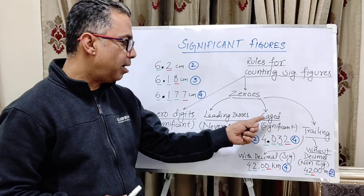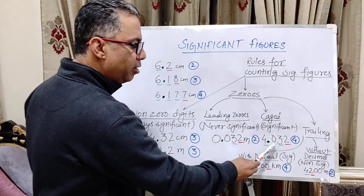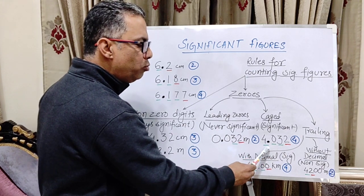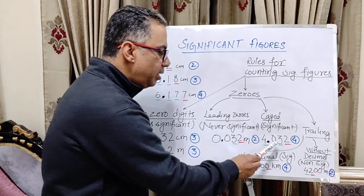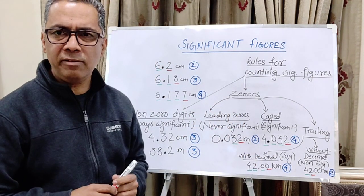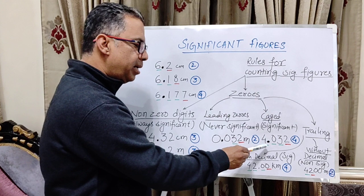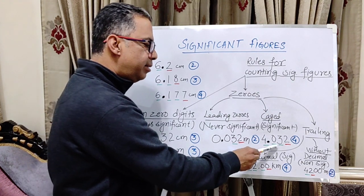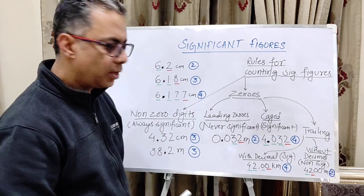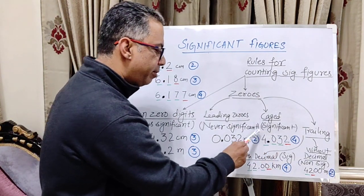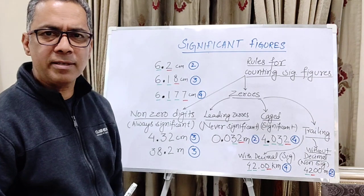Then we have another category of zeros which I call caged zeros. These are zeros which are in between two non-zero digits. These zeros are always significant. Therefore in a number like 40.08, there are three certain digits and one uncertain digit, giving us four significant digits in total.